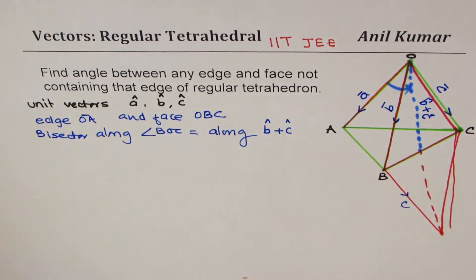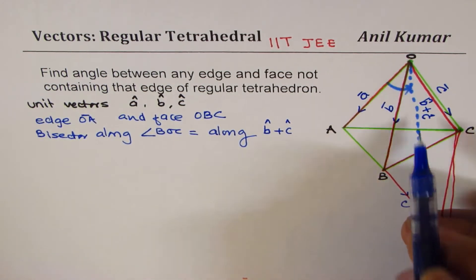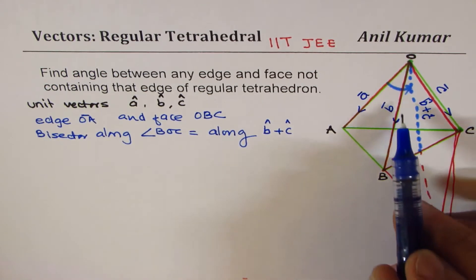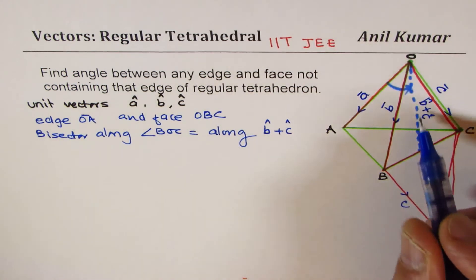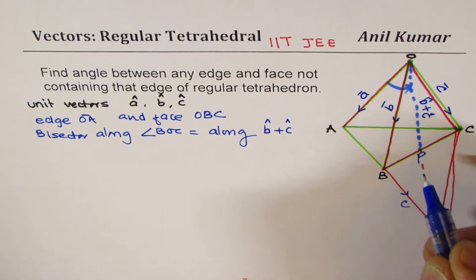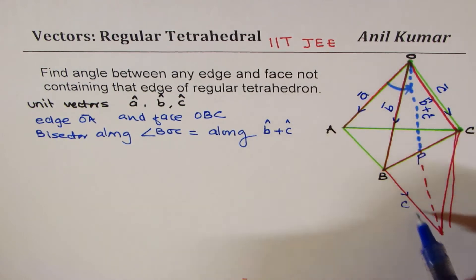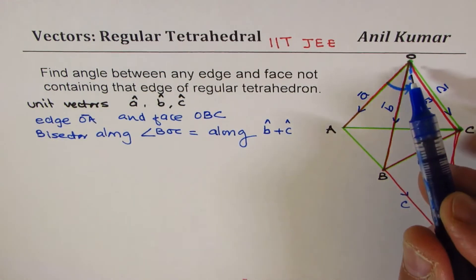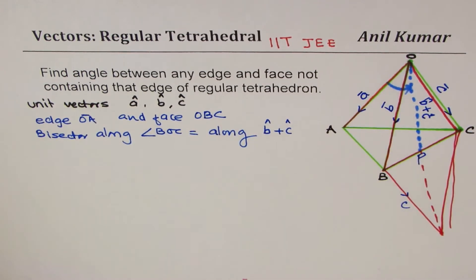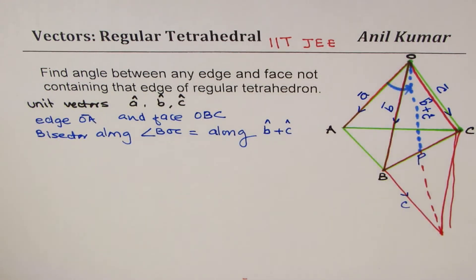That is the direction for unit vectors. When finding angles, we don't worry about length — we only look at direction. So the question boils down to finding the angle between OA and this line OP, where OP is along b+c. The angle between a, b and a, c are all 60 degrees, so cos 60° = 1/2.